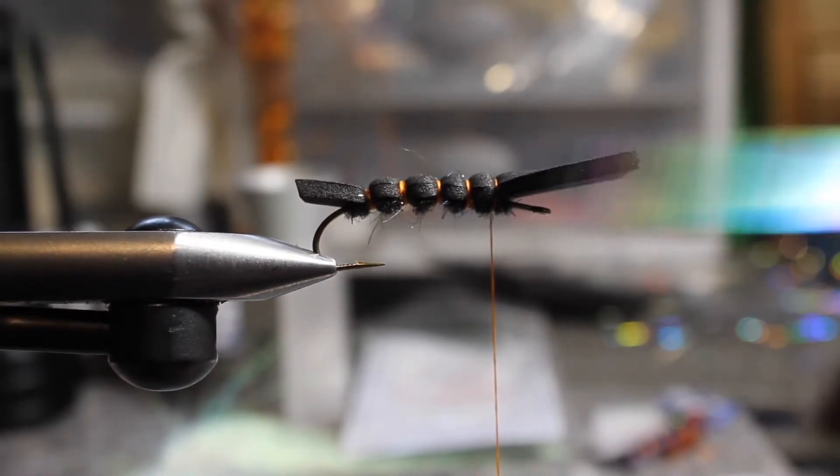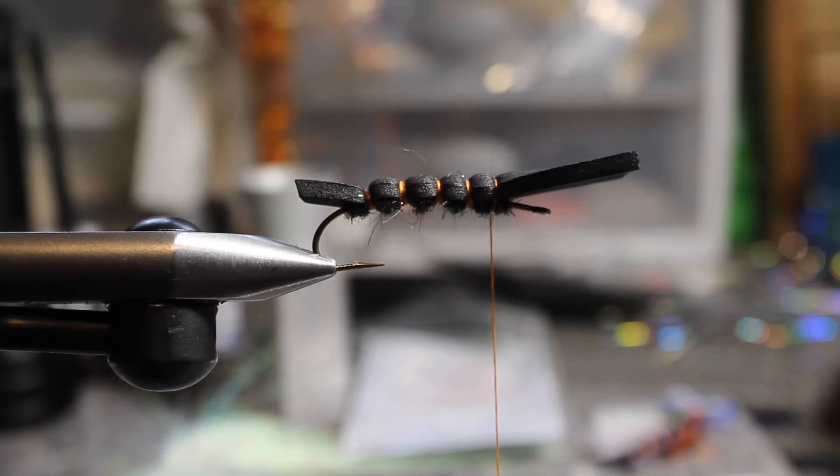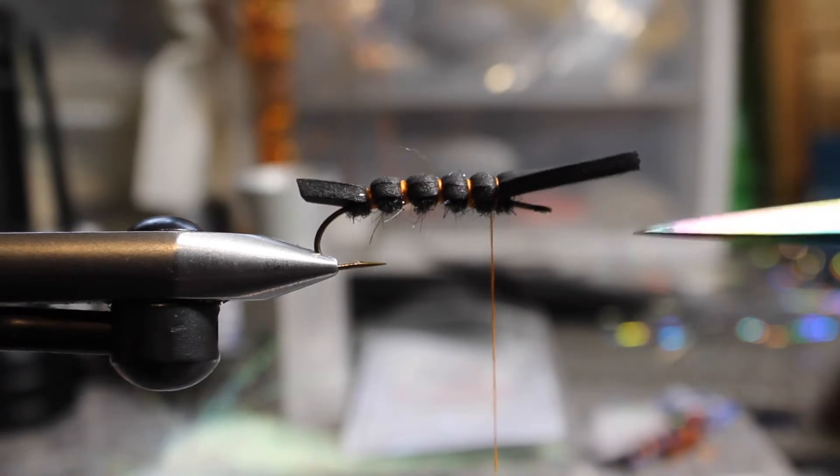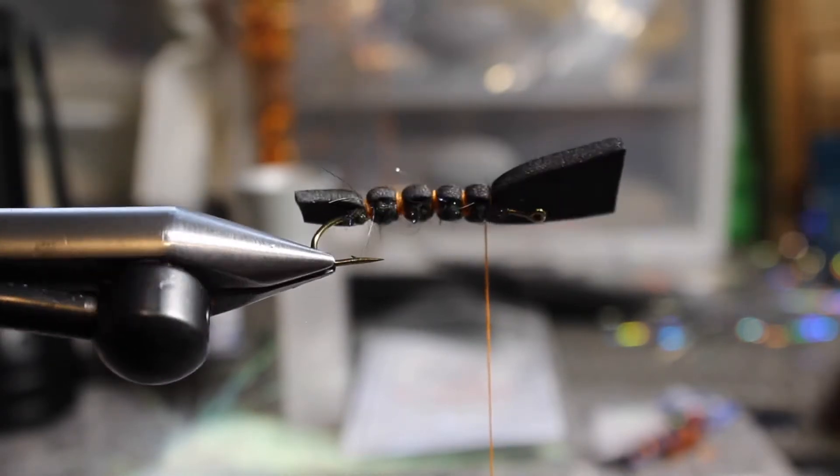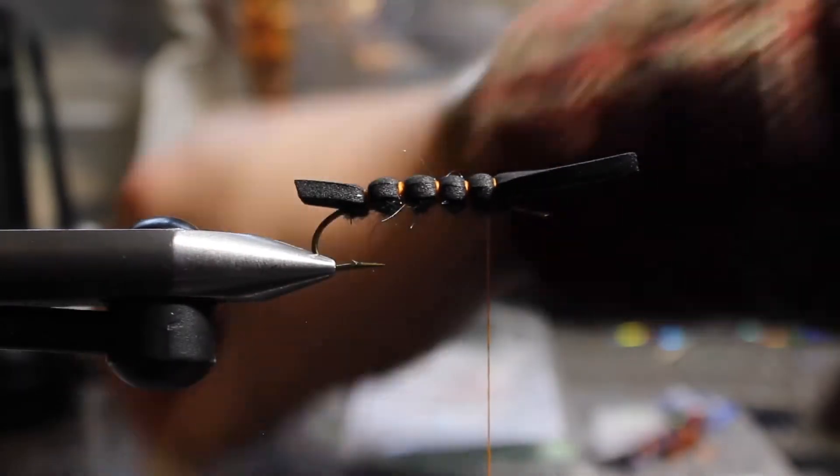This segment is going to have the most wraps around it because we're tying in legs, we're tying in flash, we're tying in a wing. So there's already going to be extra wraps around this segment. So to start out, don't do this segment heavy. Just start out real light. Just a couple wraps.